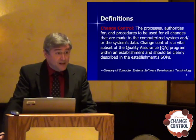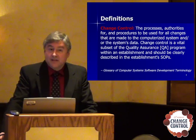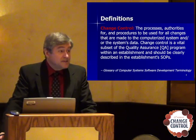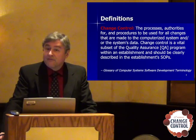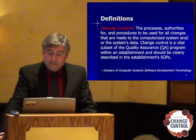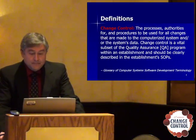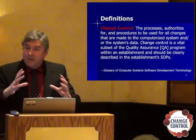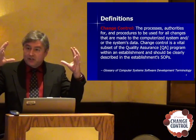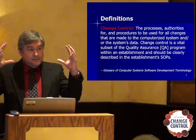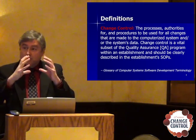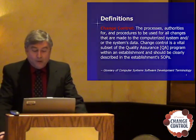One thing we didn't mention as a configuration item is data — that's something you need to think about. We all have systems containing data, such as a CAPA system with CAPA records, or a complaint system with customer complaint records. So that's something subject to change control. Change control is a vital subset of the quality assurance program within an establishment and should be clearly described in the establishment's SOPs. So here we're getting into the smallest ring of definitions: change management being the outermost ring, configuration control being the middle ring, and change control being the innermost ring — and we'll be looking at change control today.